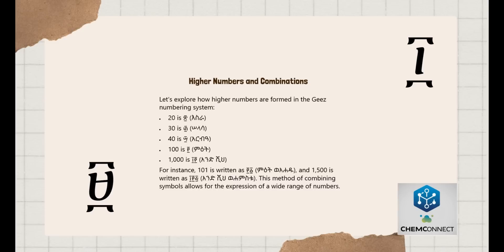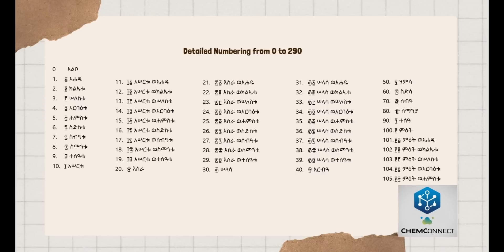Higher Numbers and Combinations: Let's explore how higher numbers are formed in the Ge'ez Numbering System. The system includes symbols for 20, 30, 40, 100, and 1000. For instance, 101 is written as a combination of the 100 and 1 symbols, and 1,500 is written as a combination accordingly. This method of combining symbols allows for the expression of a wide range of numbers.